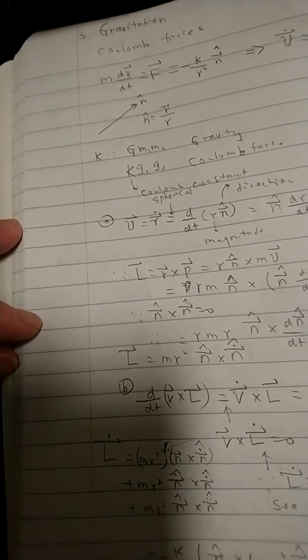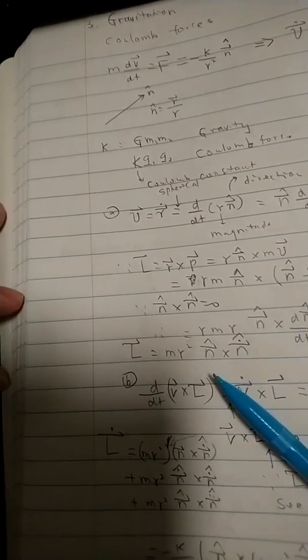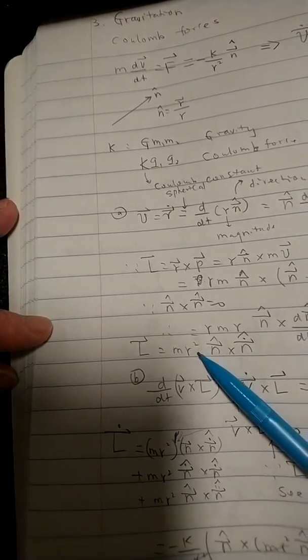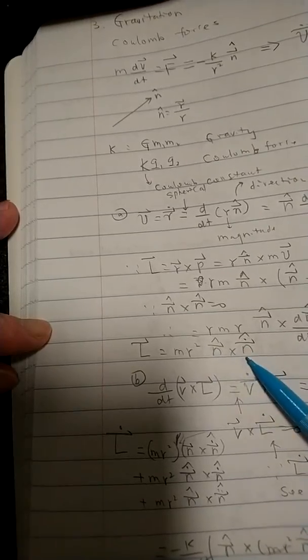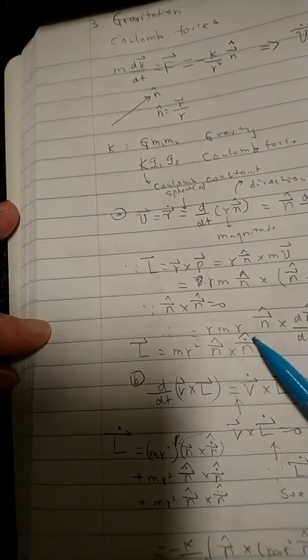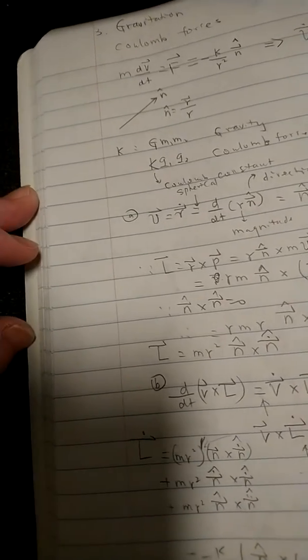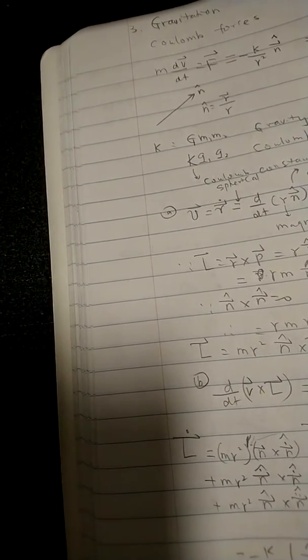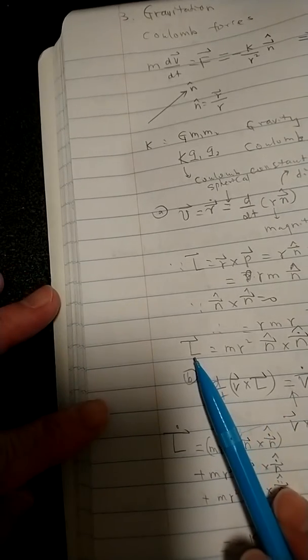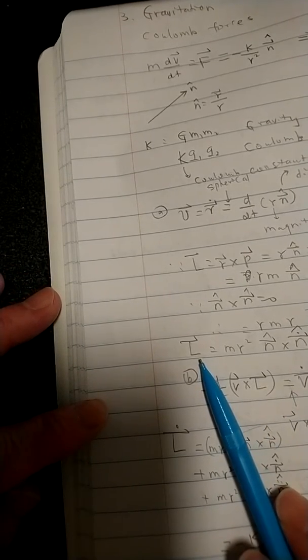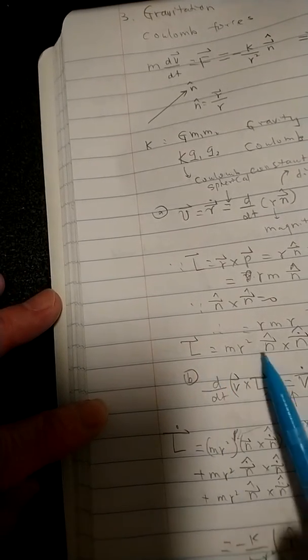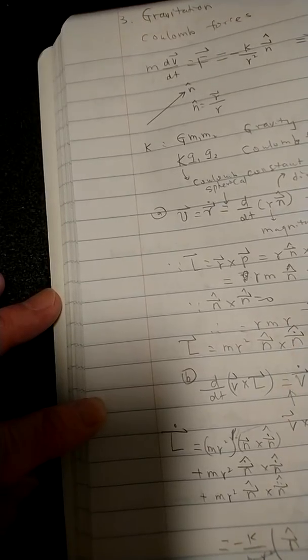So to be more precise, which is a shorthand way to write them down, just r squared times n cross product n dot, which is time derivative. So I change this one here to this one. Now this is the first part, which just tells you that the orbital angular momentum, we said it's constant. What do we mean by constant?